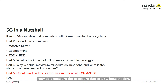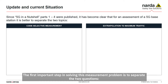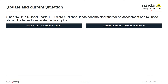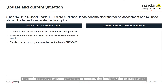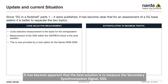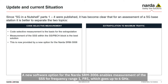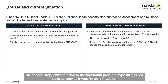How do I measure the exposure due to a 5G base station? The first important step in solving this measurement problem is to separate the two questions: How do I make a code-selective measurement? And how do I correctly extrapolate to the maximum possible exposure, particularly when considering beamforming antennas? The code-selective measurement is the basis for the extrapolation.